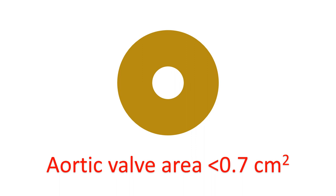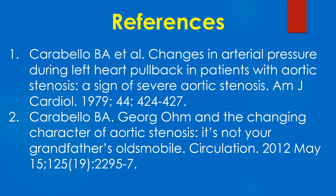A rise in pressure of 5 mmHg was considered a positive Carabello sign. The sign was absent in those with an aortic valve area of 0.7 square cm. Here are a couple of articles by Carabello on the sign named after him.